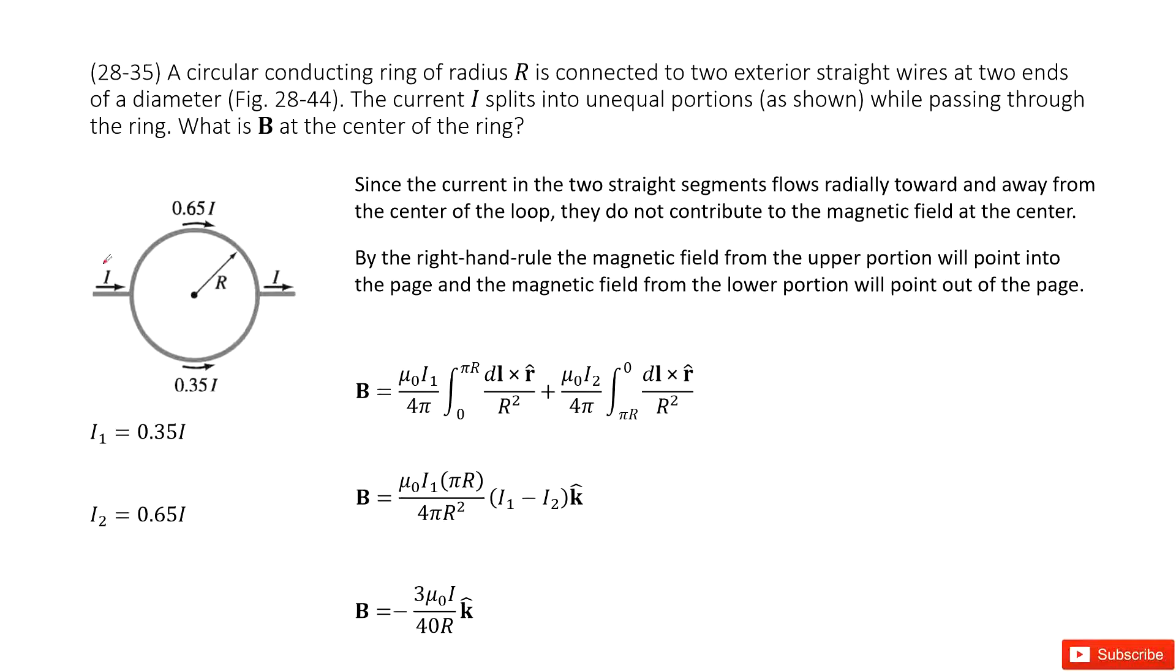So there you may have this system: a circular conducting ring. The radius is R and the current goes in this way—upside this way, the downside this way. And then we can see the downside as I1, upside as I2.